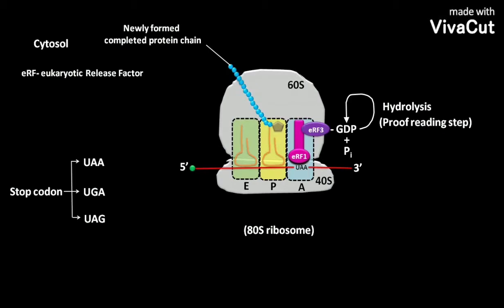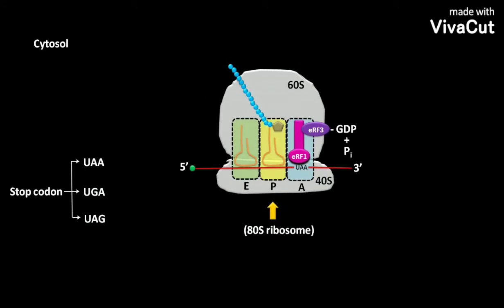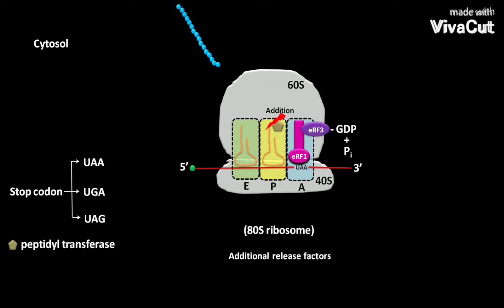After the ensurement given by the hydrolysis that eRF1 has correctly recognized a stop codon, the peptidyl-tRNA present in the P site of the ribosomal complex is added with an H2O molecule in the presence of peptidyl transferase. Due to this addition reaction, the newly formed completed protein chain separates from the tRNA and is released into the cytosol.